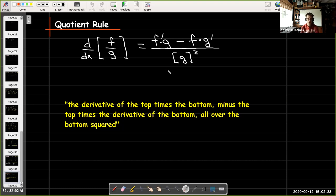So in words, we think of the quotient rule as the derivative of the top times the bottom minus the top times the derivative of the bottom all over the bottom squared.